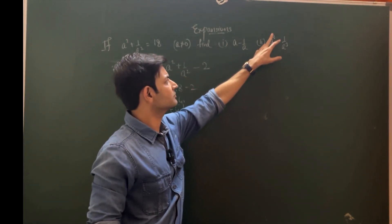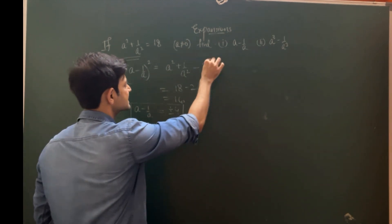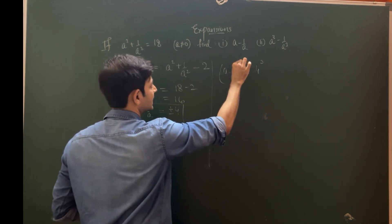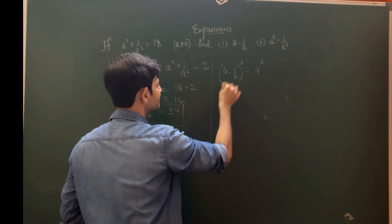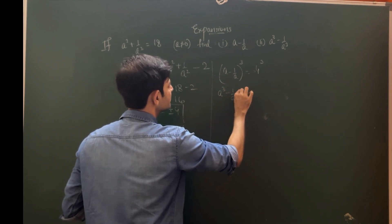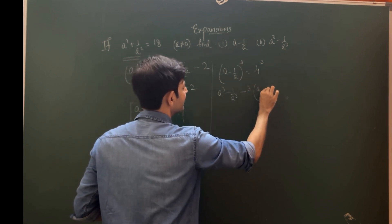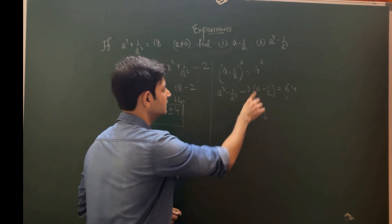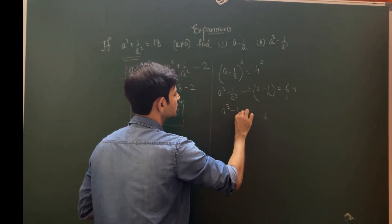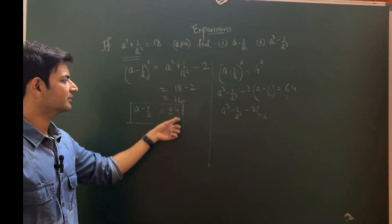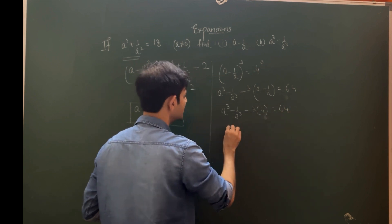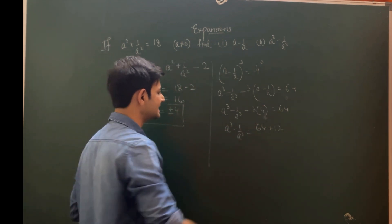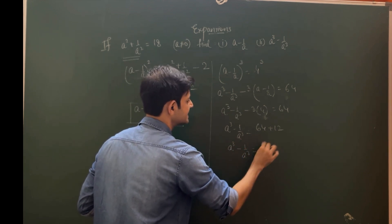For the second part, we cube both sides of a - 1/a = 4. Expanding using the cubic formula: a³ - 1/a³ - 3(a - 1/a) = 64. Substituting a - 1/a = 4: a³ - 1/a³ - 12 = 64. Therefore, a³ - 1/a³ = 64 + 12 = 76.